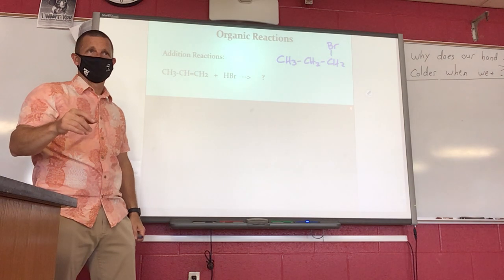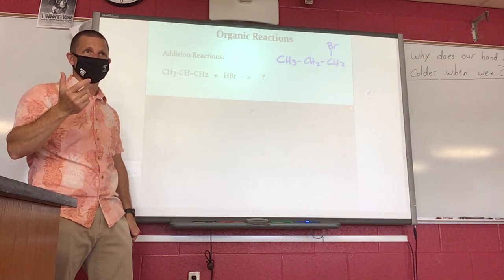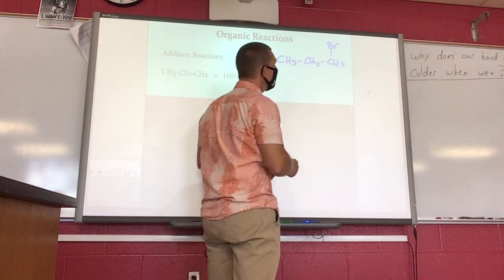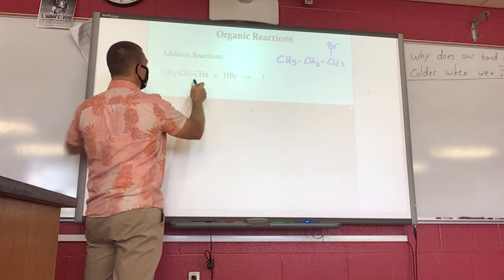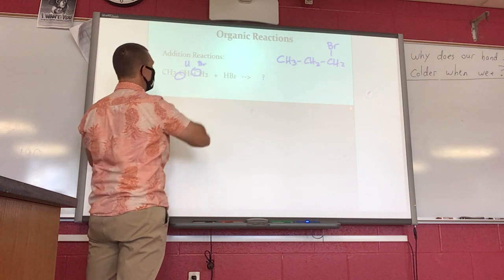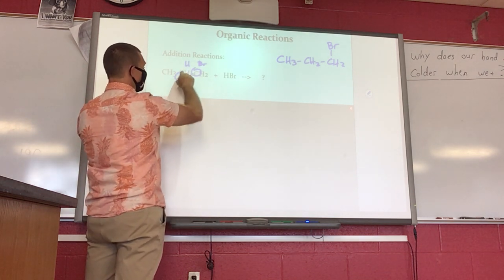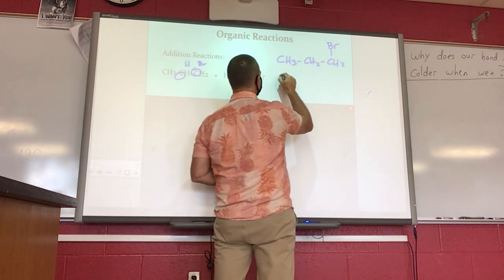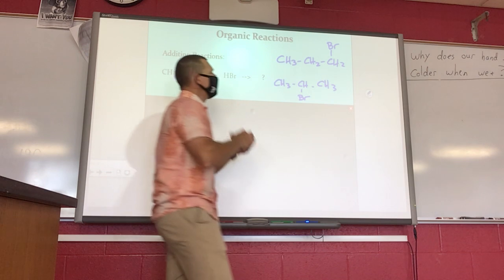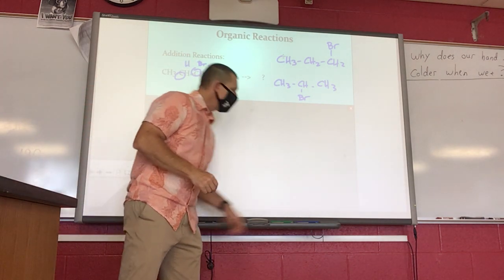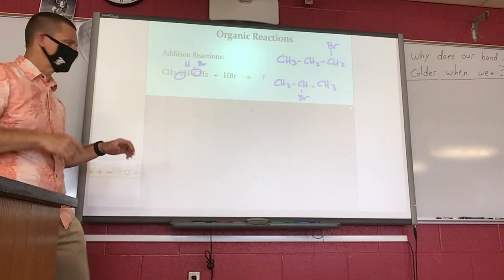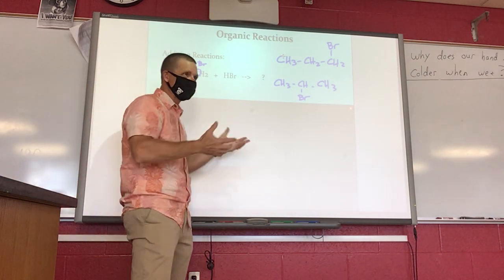There's another possible product: with H and Br, the hydrogen could go on one carbon and the bromine on the other, or vice versa. So the other possible product would be CH₃CHBrCH₃. These are the two possible products for this reaction. It turns out there is a preferred one — just as with substitution — and this has a rule named after it.